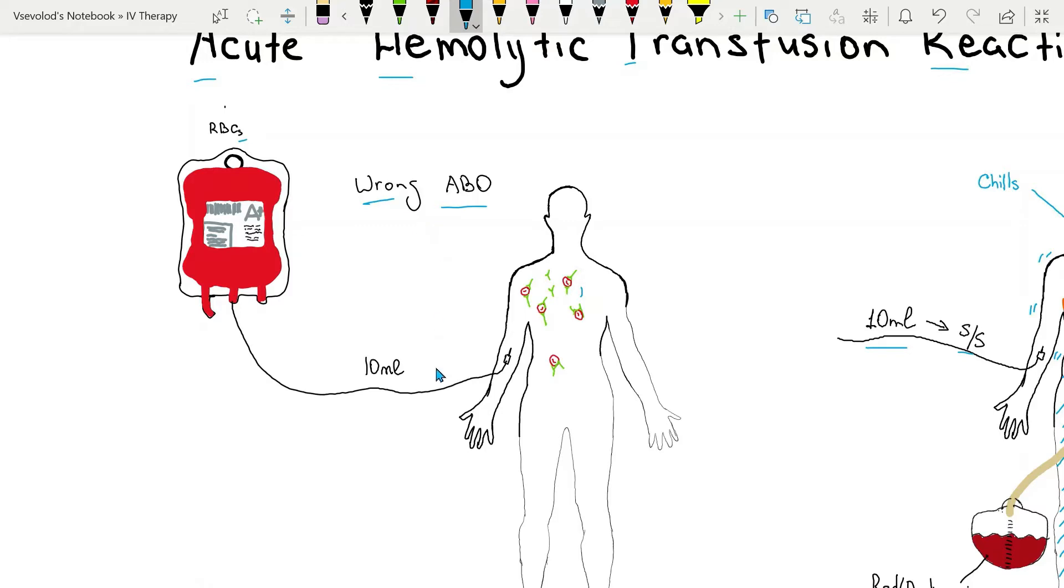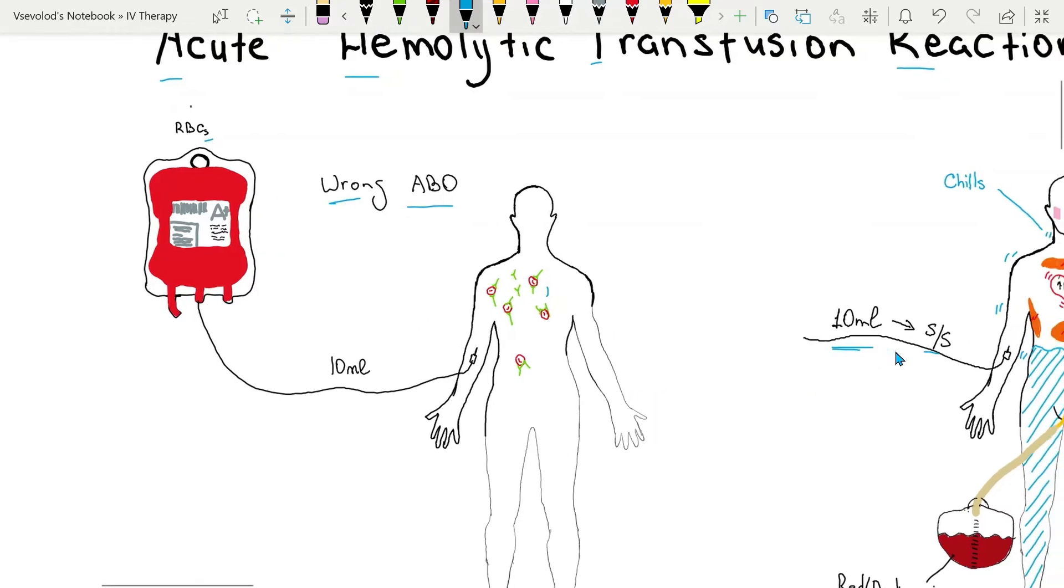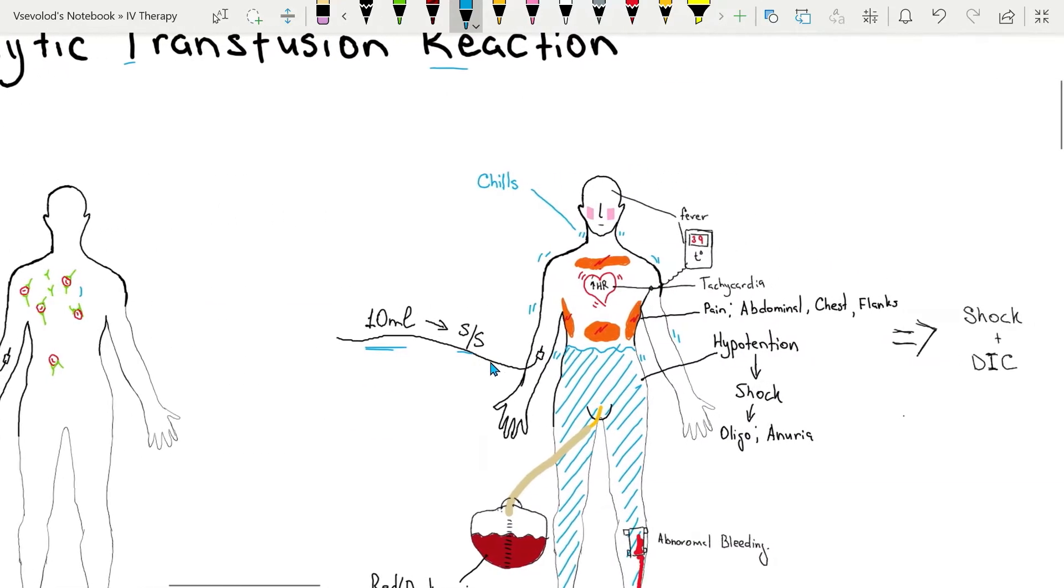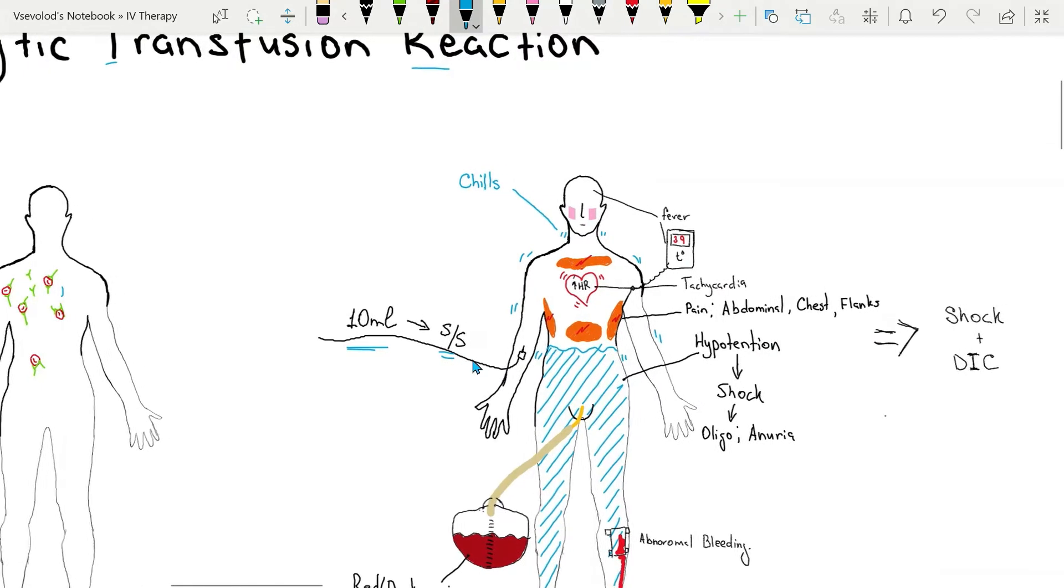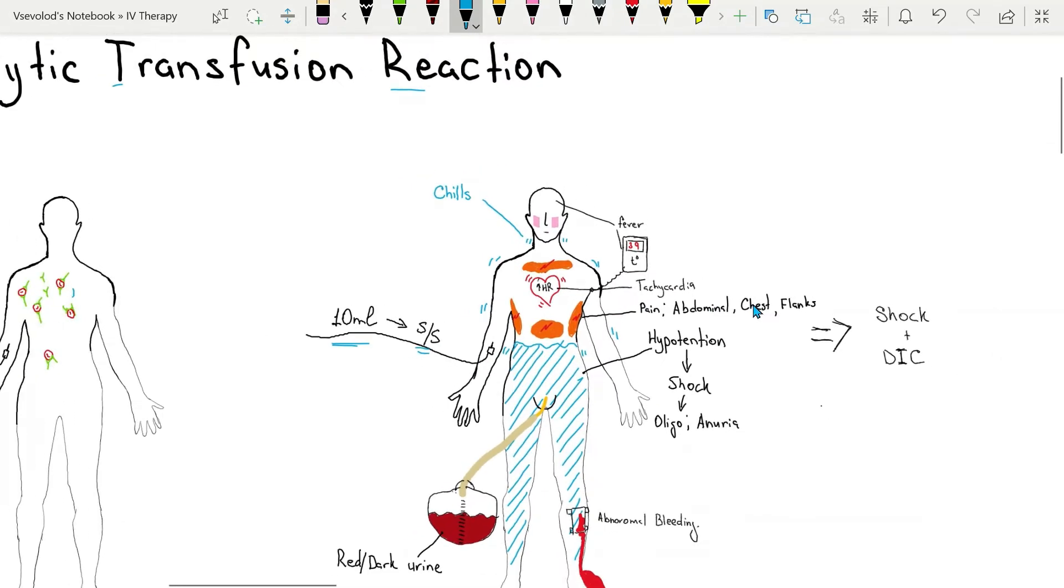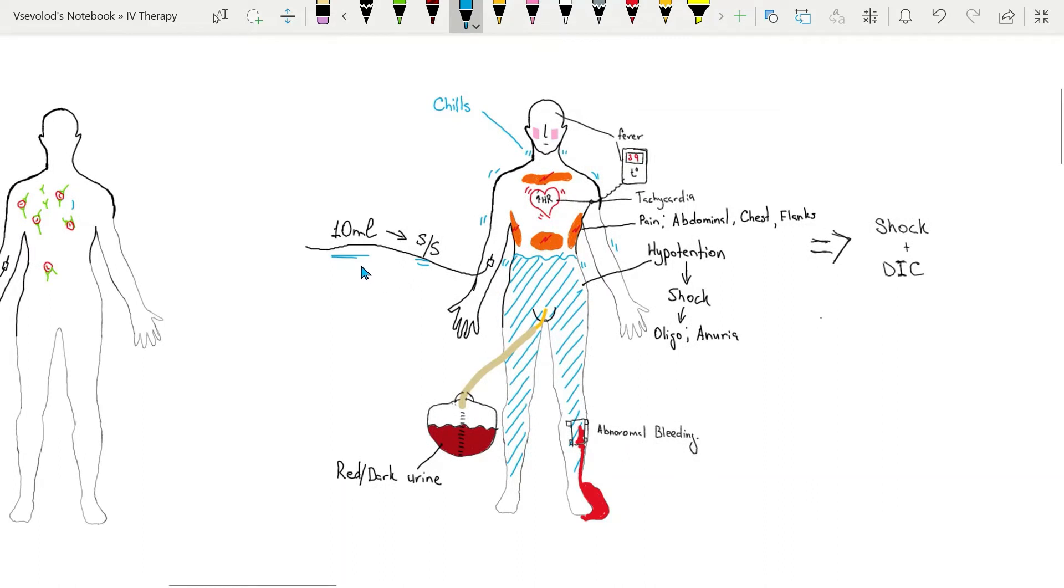As few as 10 milliliters of wrong blood can produce acute hemolytic transfusion reaction symptoms. It's very important to note that within those first 10-15 minutes, about 10 milliliters of transfused blood will be infused into the patient and you will be able to see the associated symptoms.